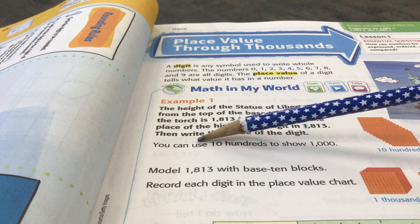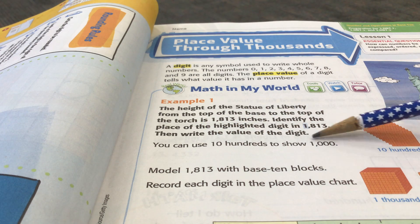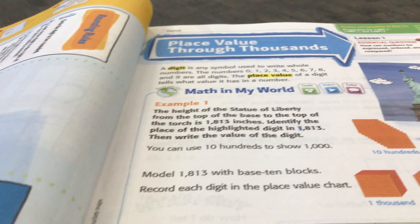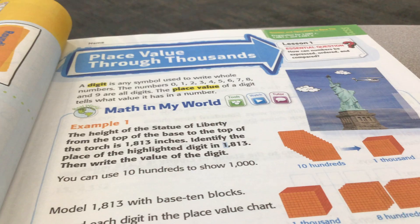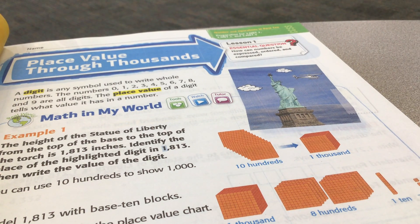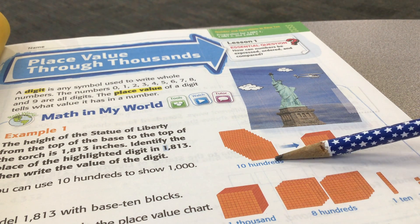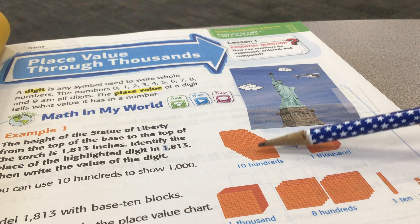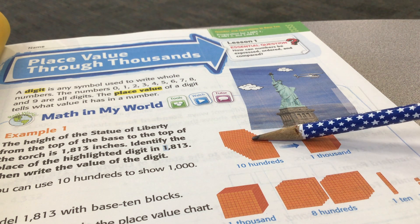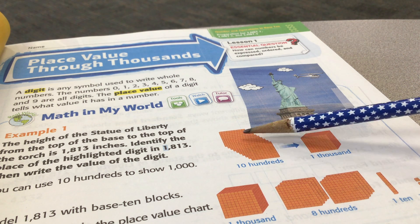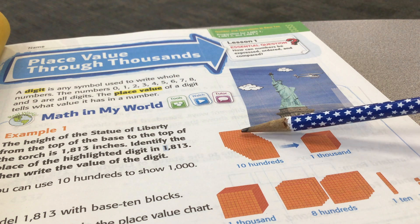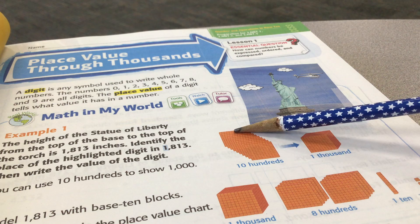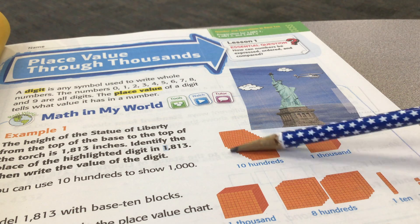You can use 10 hundreds to show 1,000. Let me show you. This block here — one of these is 100. If you have 10 of those: 100, 200, 300, 400, 500, 600, 700, 800, 900, 1,000. Ten of these 100s equals 1,000.